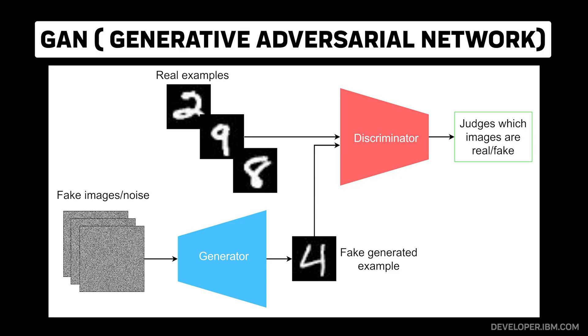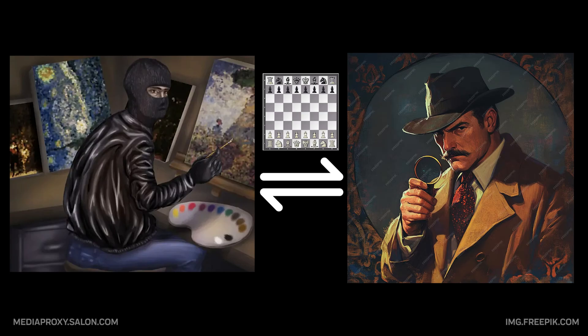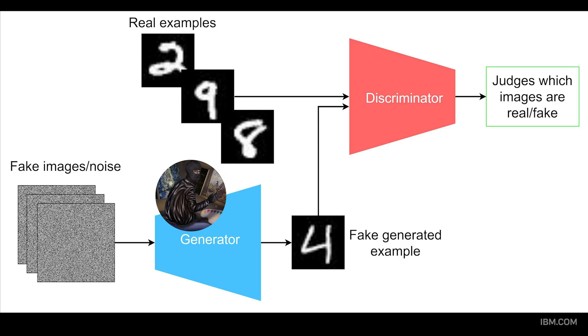The most famous architecture for image generation is GANs, Generative Adversarial Networks. They work like an art forger and detective playing an endless game. The generator tries to create fake images, while the discriminator tries to spot the fakes. As they compete, both get better until the fakes become indistinguishable from real images.